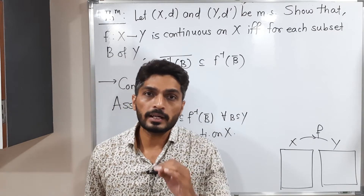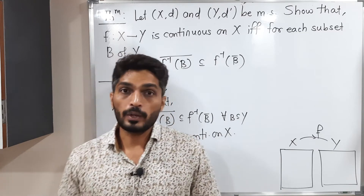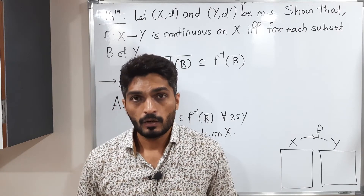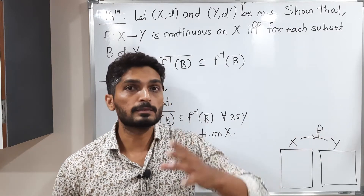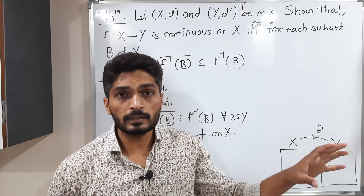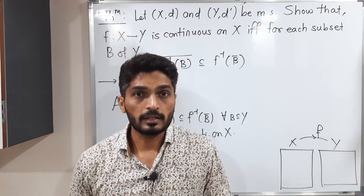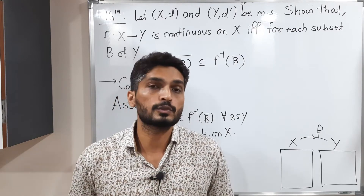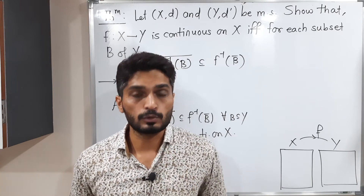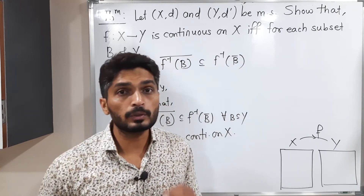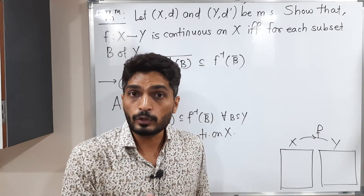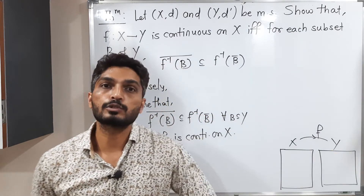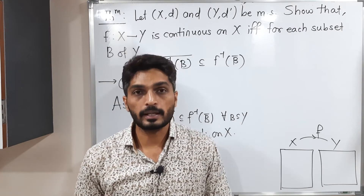In the previous video we discussed several equivalent definitions of continuous functions: the epsilon-delta definition, using sequences, open set characterization (inverse image of open set is open), closed set characterization (inverse image of closed set is closed), and the closure condition f(A-bar) ⊆ f(A)-bar. Any one of these can be used to prove continuity. Here I am going to use the closed set characterization.